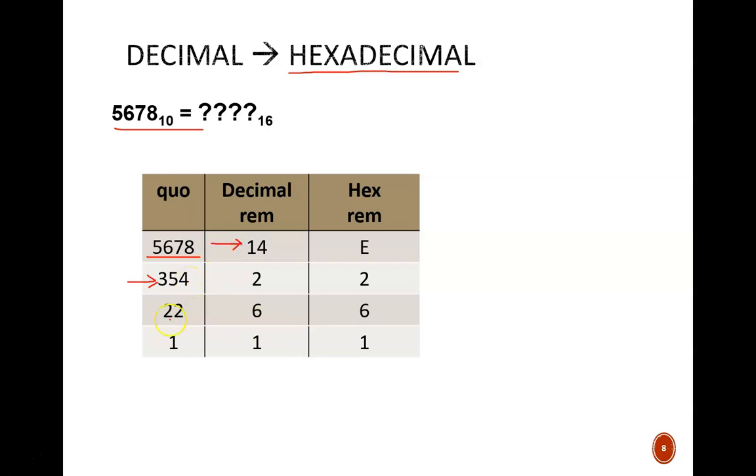Divide by 16, I get a quotient of 354 with a remainder of 14. 354 divided by 16 gives you 22 with a remainder of 2. 22 divided by 16 gives us 1 with a remainder of 6. And then finally divide 1 by 16, I get 0 with a remainder of 1.